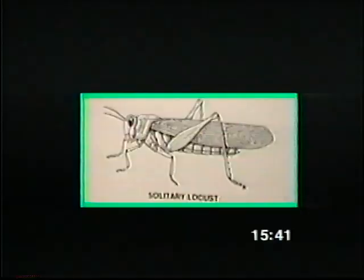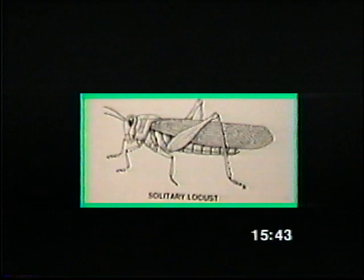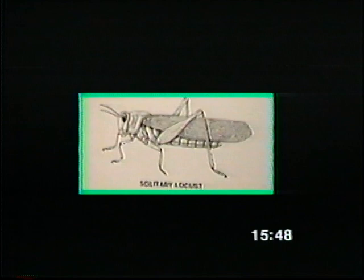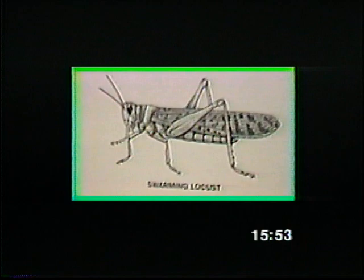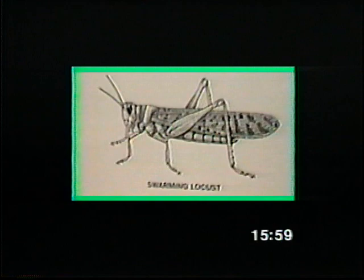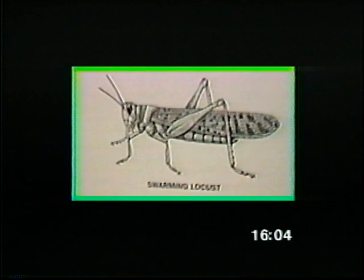In the solitary phase, they live alone. They do not congregate and are sluggish in behavior. Their color matches that of their surroundings. In the swarming stage, they live in large groups. Their color is black and yellow. At this time they're very active and nervous. When crowding is forced on the locusts in the solitary phase, they produce locusts of the swarming type. These locusts are restless and irritable. They begin to wander and are then joined by others. A great swarm develops and soon millions of them are ready to descend on a region in the form of a plague.